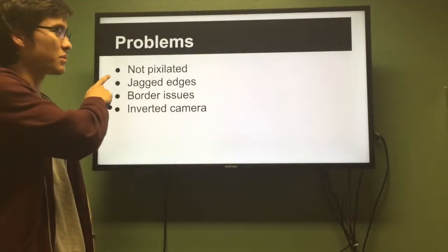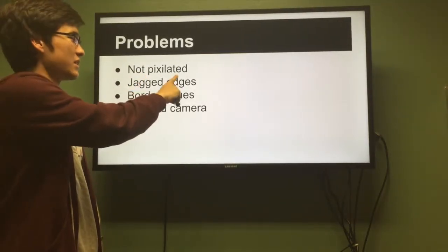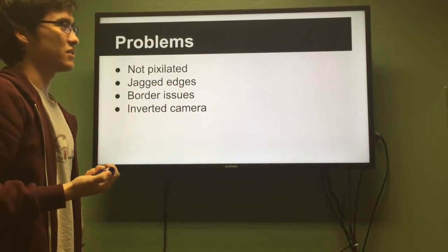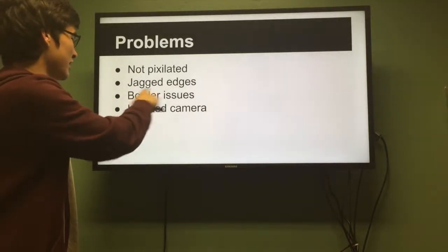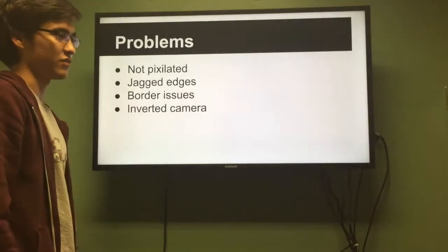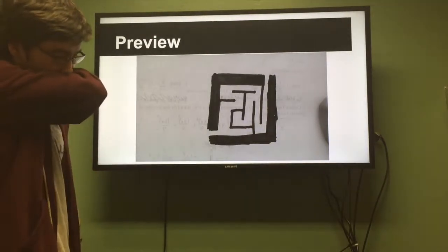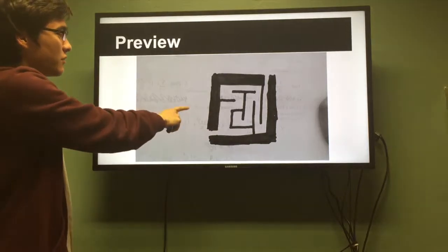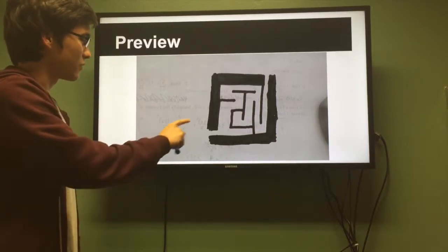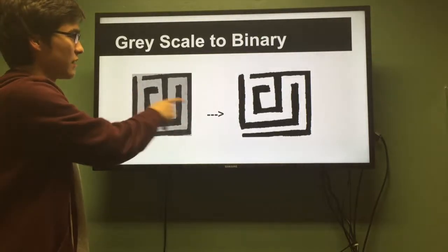The problems with using this method are that the mazes aren't pixelated — all jagged edges — and some of the maze solving programs didn't actually work. There are also border issues and the camera is inverted, which is awkward. Here's a preview of the grayscale image on the back of a math test. We cropped the image, resized it, and converted the values into binary.